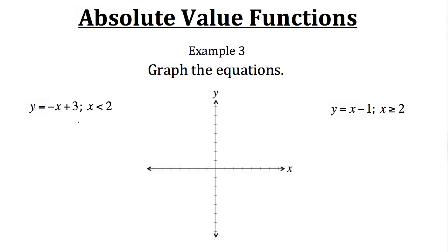Starting with the negative side equation, y equals negative x plus 3. We start at a y-intercept of positive 3, with a slope of negative 1, so we go down 1 over 1. Remember, we're only using this when x is less than 2, so we don't go any farther than x equals 2. When we graph it, it stops right before 2, covering that whole interval.